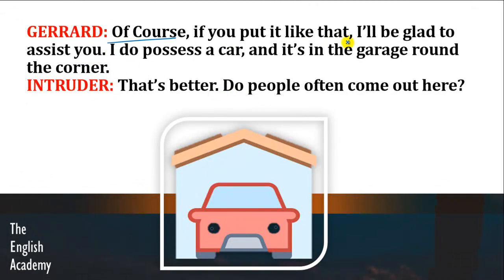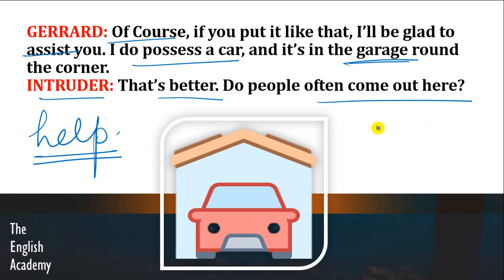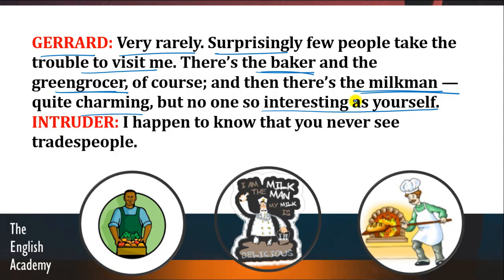Gerard says: 'Of course, if you put it like that, I'll be glad to assist you. I do possess a car and it's in the garage round the corner.' Assist means to help. Intruder says: 'That's better. Do people often come out here?' Gerard says: 'Very rarely. Surprisingly few people take the trouble to visit me. There's the baker, and the green grocer, and the milkman — quite charming, but no one so interesting as yourself.' Gerard kehta hai ke bahut hi thode se log hain jo usse visit karne aate hain, aur unme se koi bhi tumhari jitna interesting nahi aaya aaj tak.